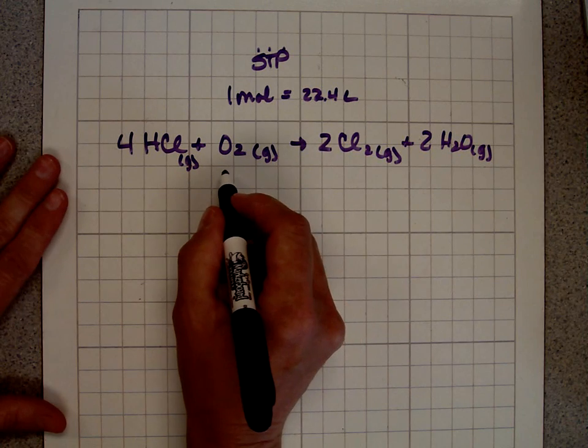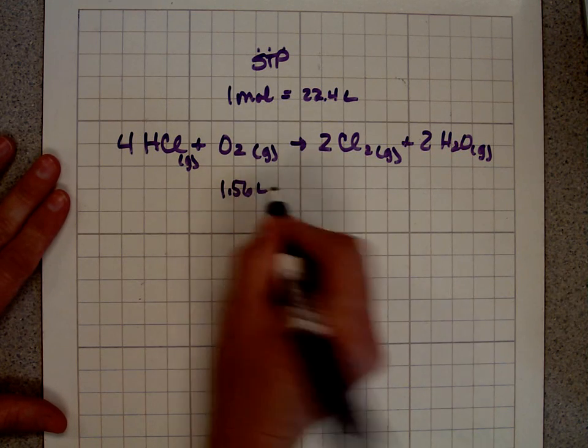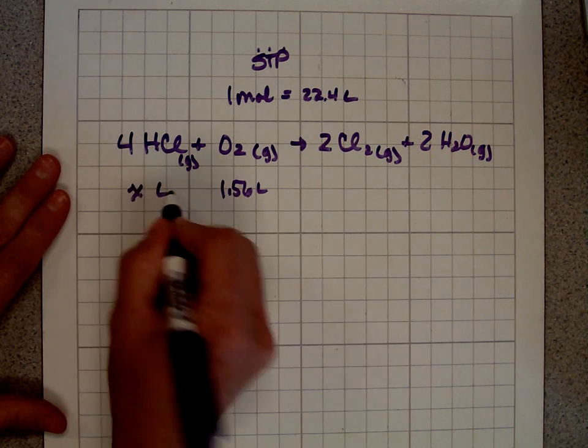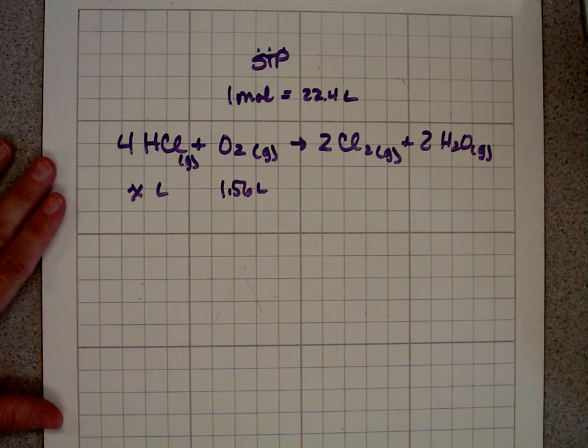And the question is, if I have 1.56 liters of oxygen, how many liters of hydrochloric acid do I need to completely react with that?